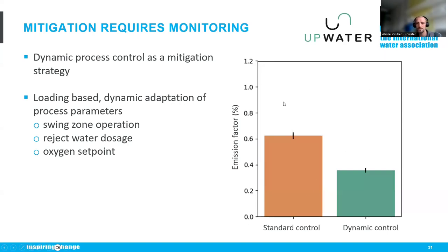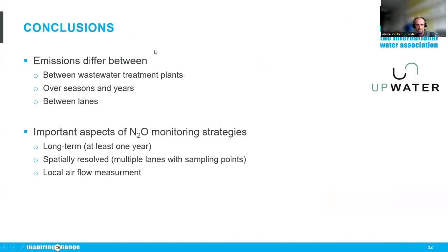From a real wastewater treatment plant with two years of monitoring: with standard control, the emission factor was above 0.6%, and once they implemented dynamic control they reduced it by 50%. This has been shown on multiple wastewater treatment plants. In conclusion, emissions differ between plants, over seasons and years, and between lanes due to spatial variability — so measuring as long as possible makes sense. This is why we need a highly spatially resolved monitoring approach.